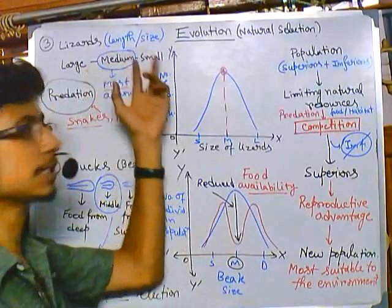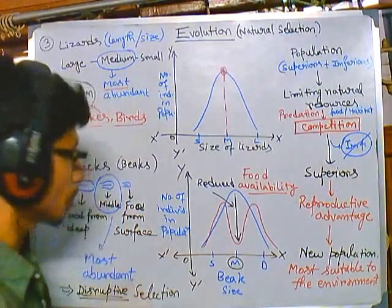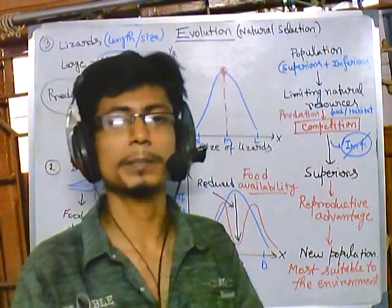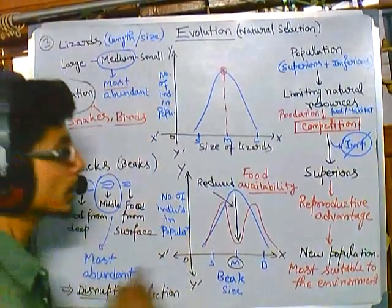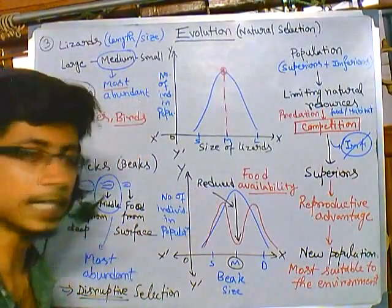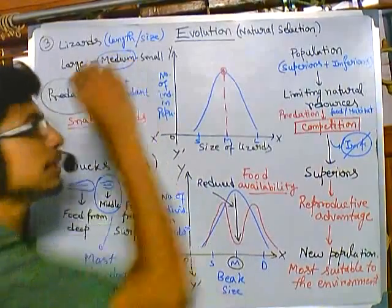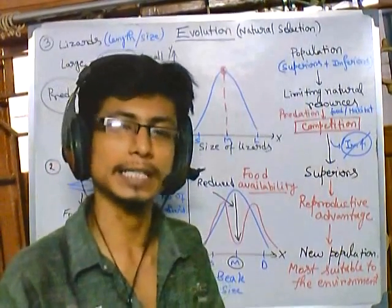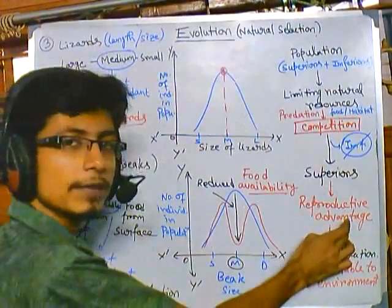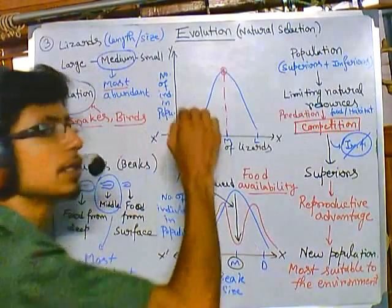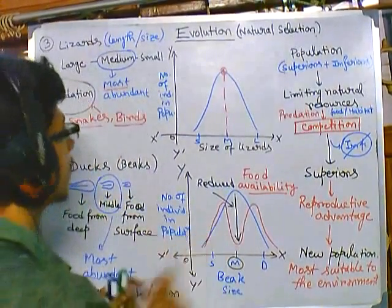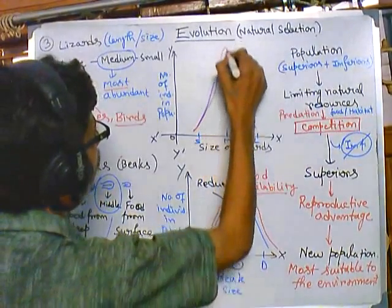During predation, the population is directed towards producing more and more medium-sized lizards, because superior quality traits are selected and given reproductive advantage. The superior quality here is having medium body size, so those lizards are selected and get the reproductive advantage — as a result, this particular trait is selected during natural selection.